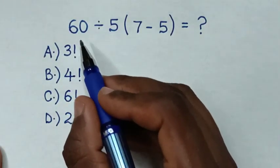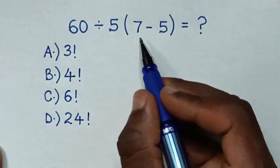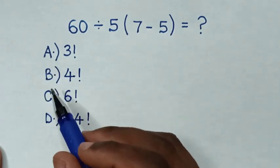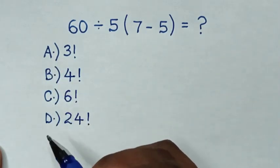Hello, how to solve 60 divided by 5, 7 minus 5 inside the bracket, by selecting the answers in A, B, C or D.